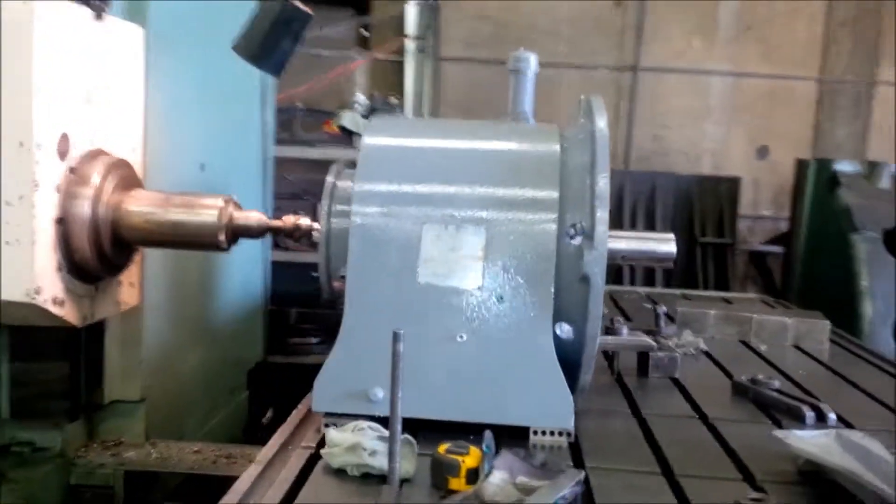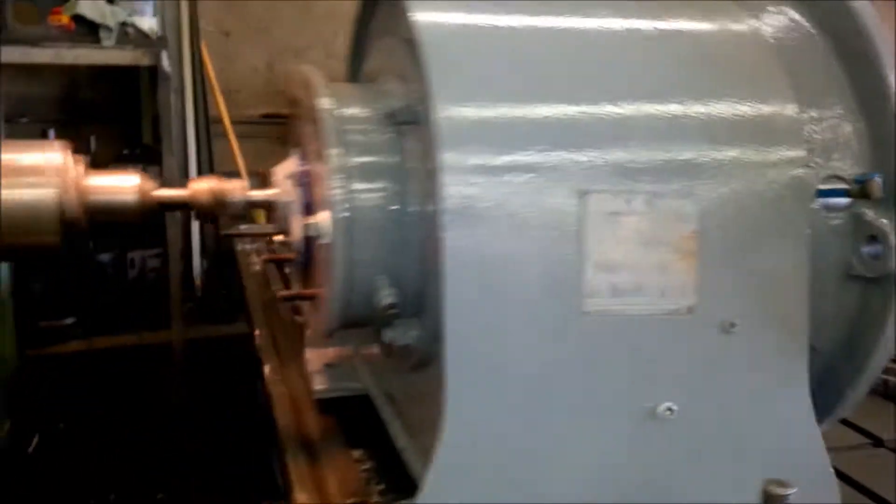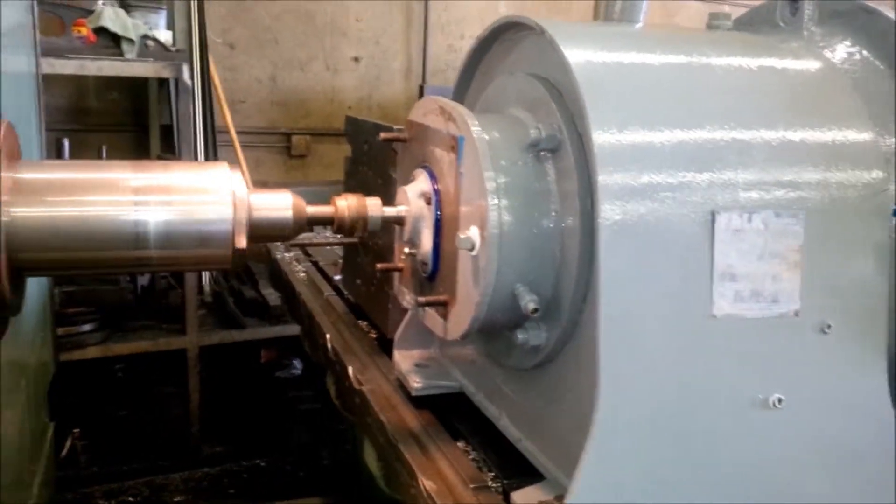This is a Falk speed reducer. It is an 11,000 to 1 ratio. Extremely slow turning gearbox.